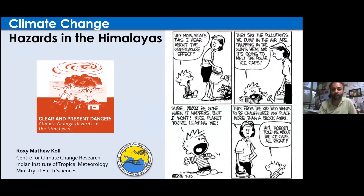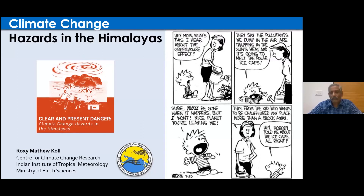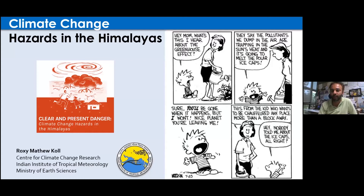Thank you, Jagdish. Let's get into what climate change hazards in the Himalayas mean to us. I use a Calvin and Hobbes cartoon to summarize climate change. The first panel shows questions about the greenhouse gas effect; the second shows how greenhouse gases trap solar insolation and melt glaciers like those over the Himalayas; the third shows the long-lasting impact — even our children's grandchildren will face impacts for perhaps thousands of years because CO₂ has a long atmospheric lifetime.